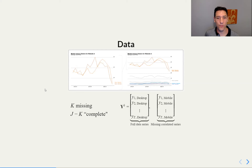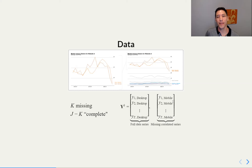What do the data look like? In this case, we have K missing countries — or K missing mobile information — and we have J minus K complete. So we have desktop information for all J countries, and we're missing mobile for K of the countries.